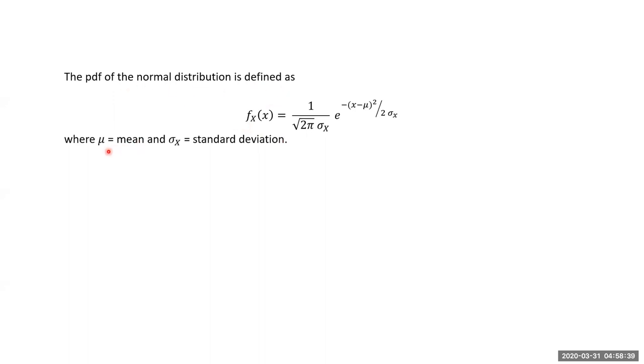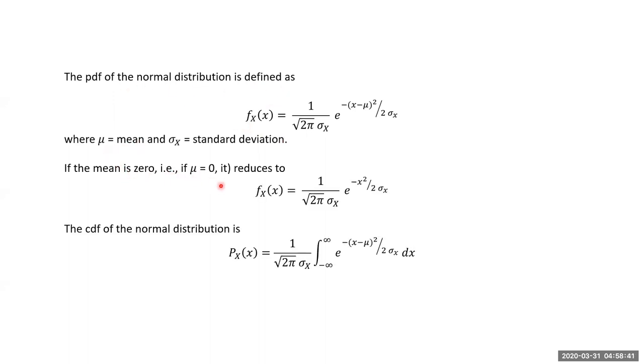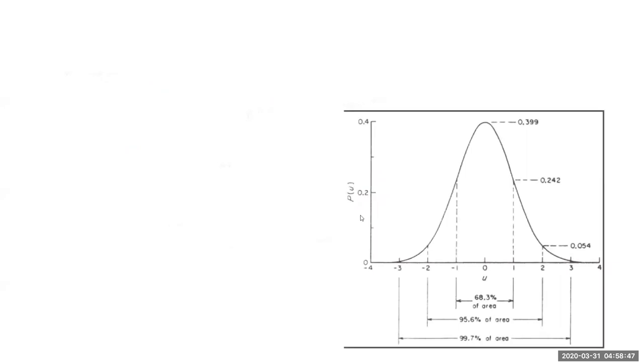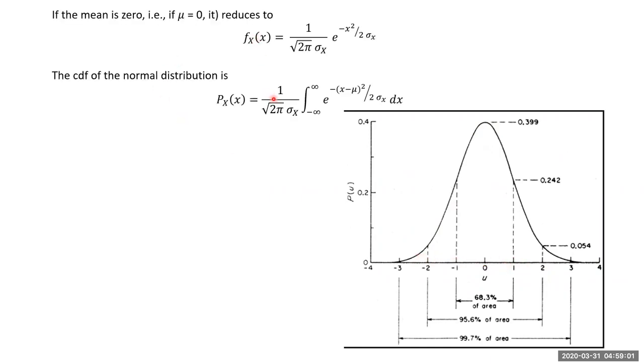The pdf of a normal distribution, if the mean is 0, then minus x squared by 2 sigma x comes. This is the normal thing. I can put any sigma value and get any normal distribution curve. I can put a sigma value of 1 and then get this curve. So if we put a sigma value of 1, then the equation is like this, sigma equals 1 here. I can get this value, I can get this area.